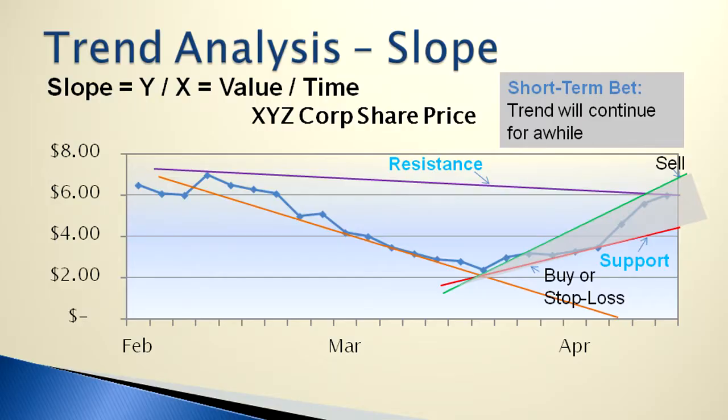If you figure out where the line is likely to go, then you can set points where that's about as high as I'm willing to go, I'll sell it there. Or that's about as low as I'm willing to go, I'll buy it there. That's where your buy and sell decisions are coming from.